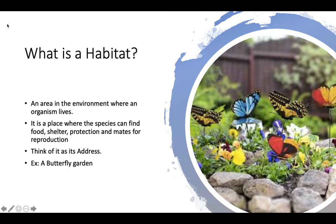Let's start with defining a habitat and then comparing that to a niche. A habitat is an area in the environment where an organism lives — it is a place where the species can find food, shelter, protection, and mates for reproduction. Think of it as its address. For example, a butterfly garden would be an example of those butterflies' habitat.